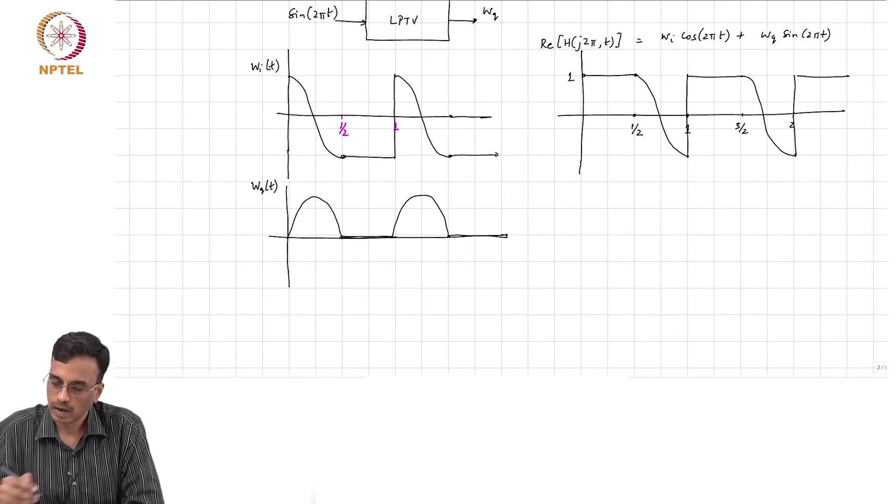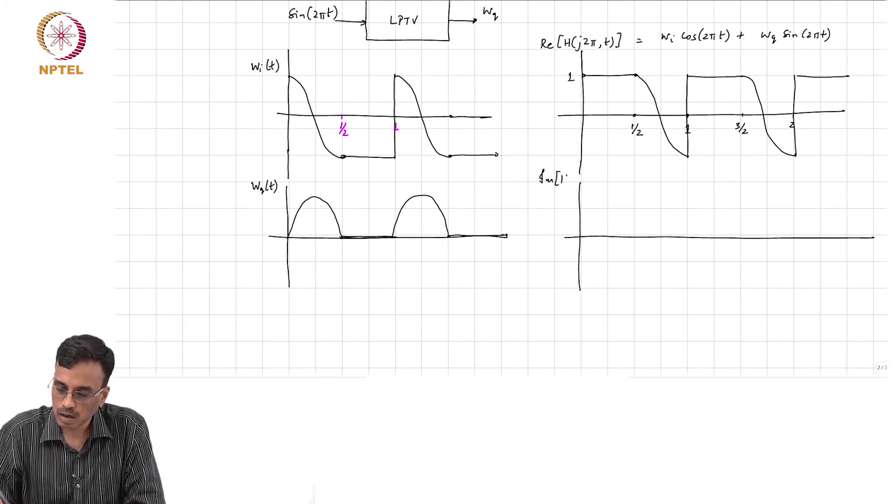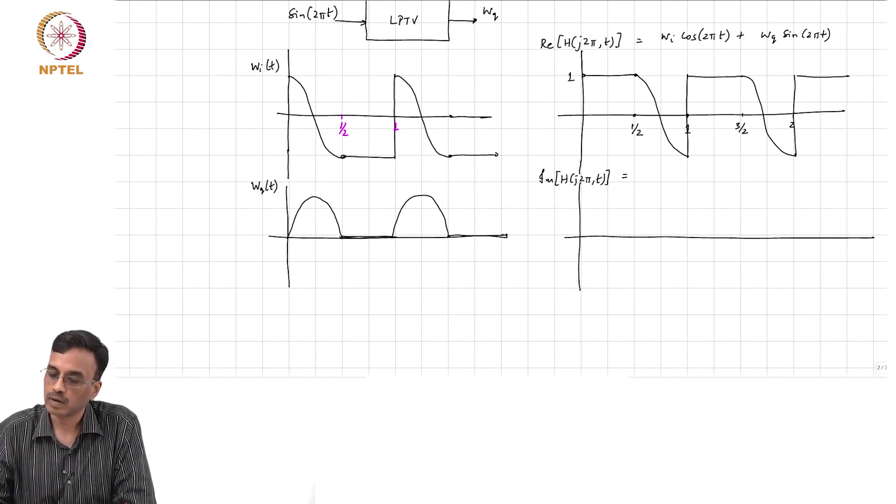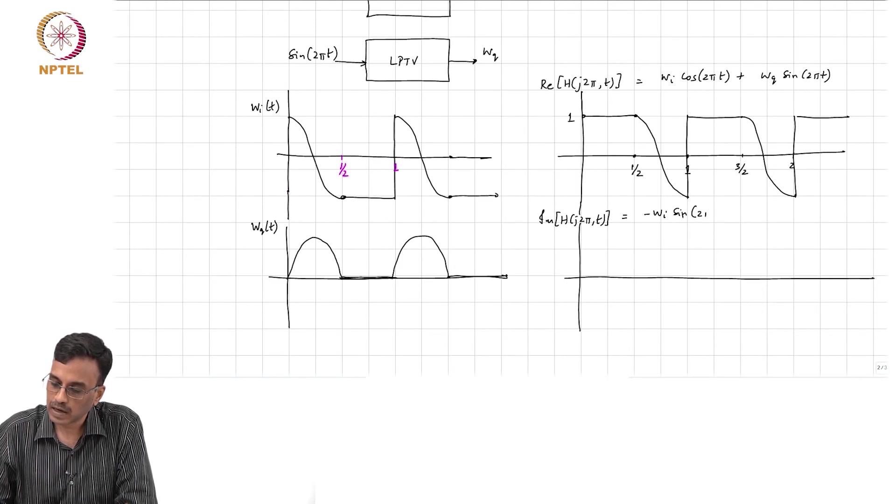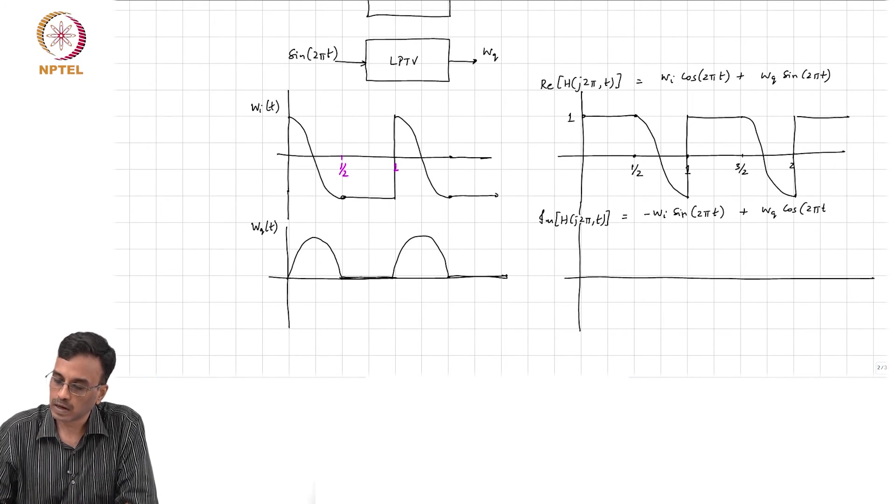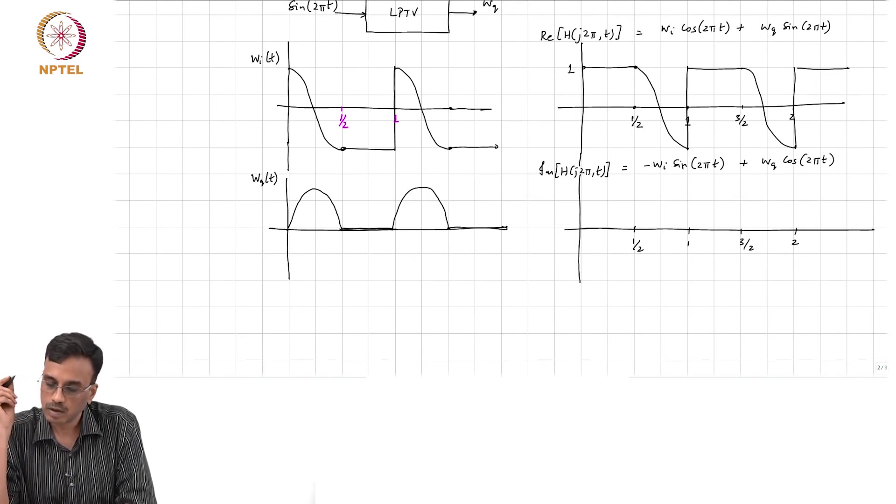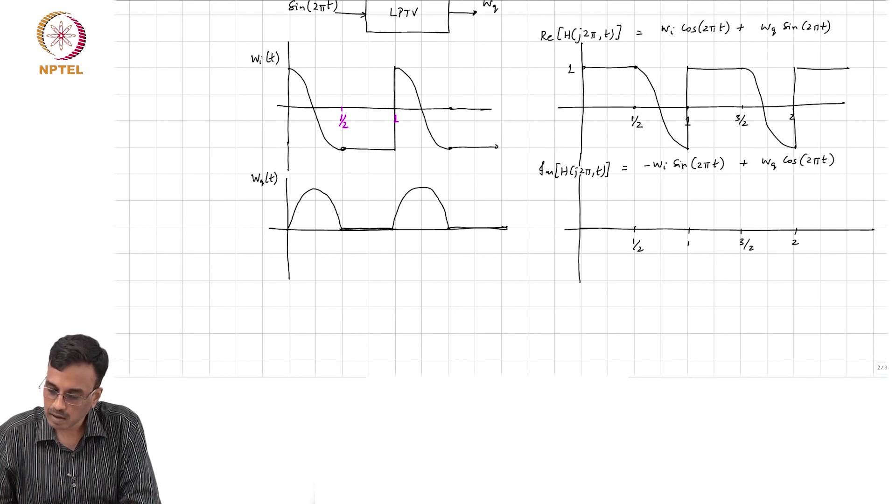Make sense, people? And what comment can we make about the imaginary part, which is minus wᵢ sin 2πt plus wq cos 2πt? How will this look like? wᵢ into sine plus wq into cos - that will simply be 0.